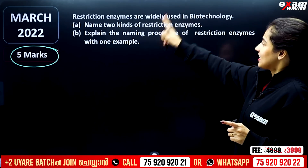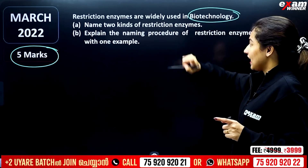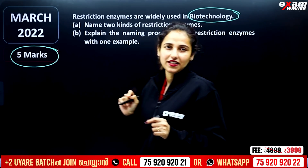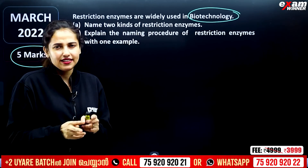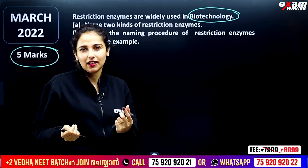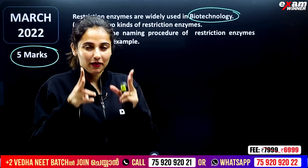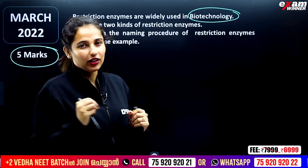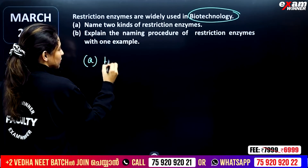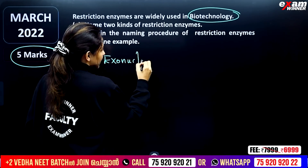The next question: restriction enzymes are widely used in biotechnology. Name two kinds of restriction enzymes. Restriction enzymes are used to cut DNA fragments. Under one type of restriction enzymes, we have exonucleases.